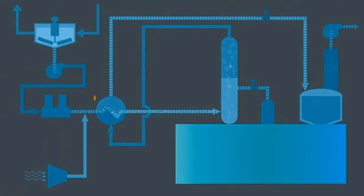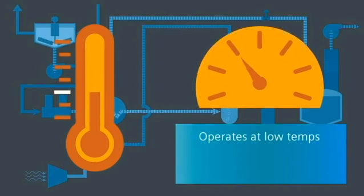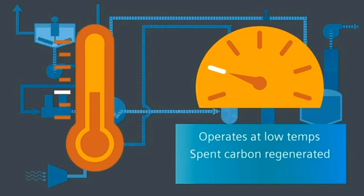The Wet Air Regeneration System operates at low temperature and pressure, allowing the surface of the spent carbon to be regenerated but not damaged. The system regenerates the carbon as slurry so that expensive dewatering steps are not required.